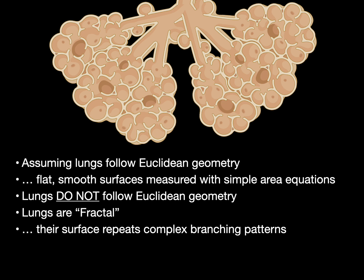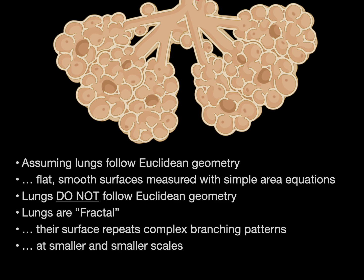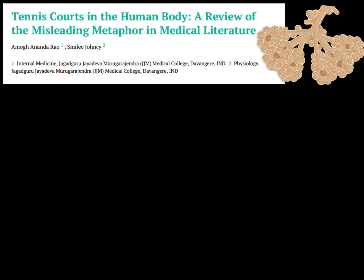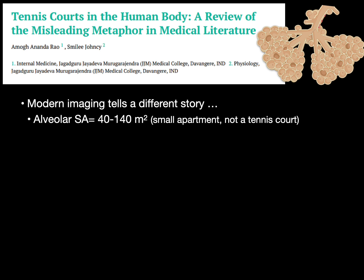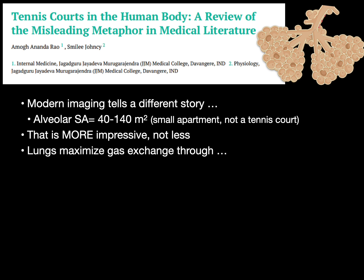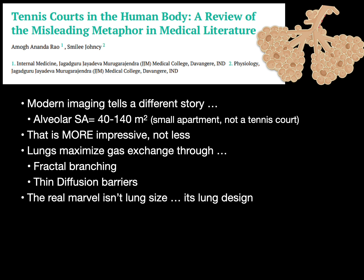Their surface repeats complex branching patterns at smaller and smaller scales. A paper by Rayo and Johnsey showed that modern imaging tells a different story: alveolar surface area is more like 40 to 140 square meters — that's like a small apartment, not a tennis court. But that's more impressive, not less. Lungs maximize gas exchange through fractal branching and thin diffusion barriers. The real marvel isn't lung size; it's lung design.